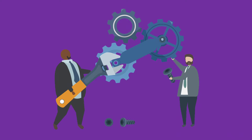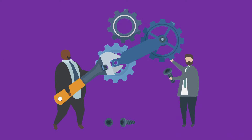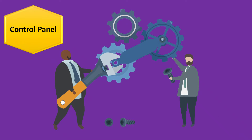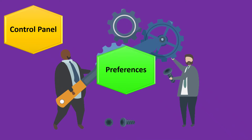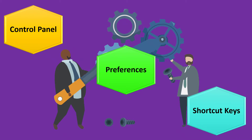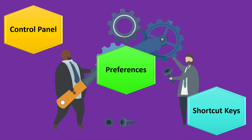You can control the playback speed in three ways: through the control panel, using preferences, and by applying shortcut keys.